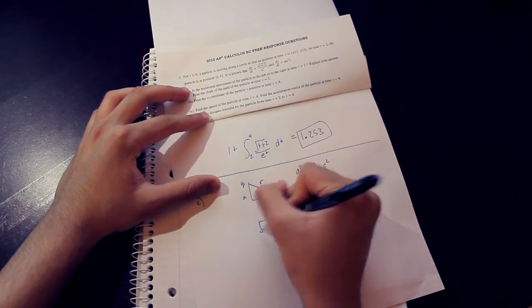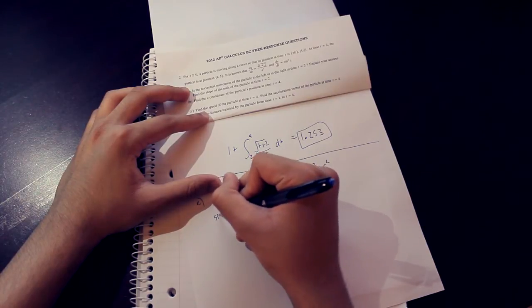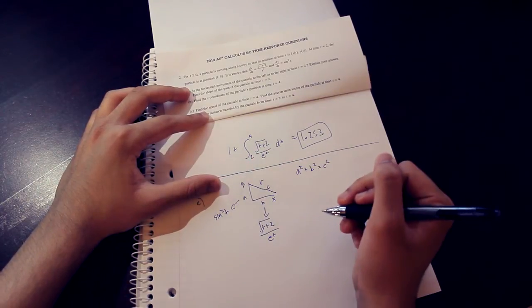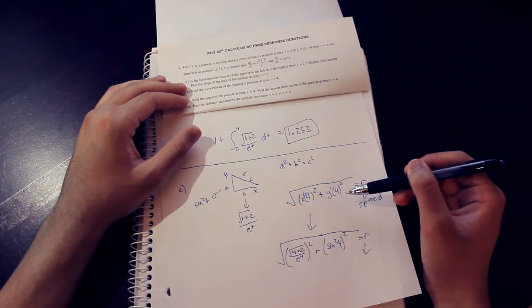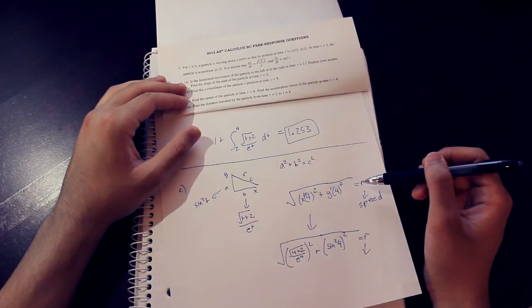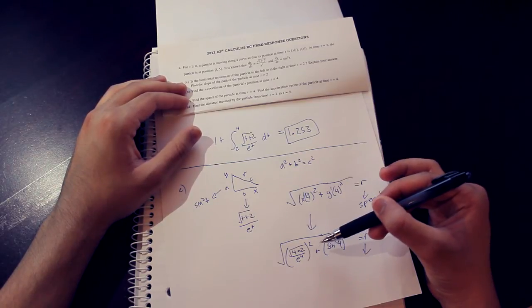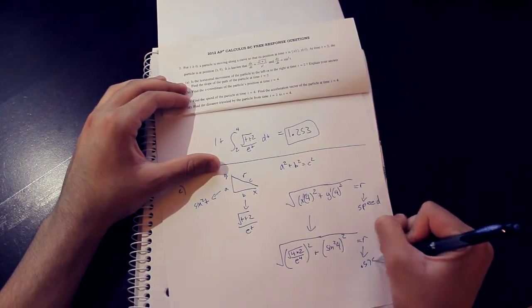In this scenario, our x vector is the square root of t plus 2 over e to the t, and our y vector is sine squared t. We get that the square root of our x vector squared plus our y vector squared equals our resultant. The rest of the problem is easy. You just plug in t equals 4 to the entire equation, and you get that the resultant is .575.